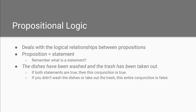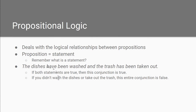Remember what we said about statements: statements are sentences or utterances which can be true or false. Consider this example: 'The dishes have been washed and the trash has been taken out.' If you indeed completed both of those tasks — you washed the dishes and took out the trash — then the entire conjunction is true. If you did one or the other, that would make the entire conjunction false. And obviously if you just got lazy, the conjunction is going to be false anyway. We need to find a way to better represent all of those possible scenarios, and we do so through truth tables.